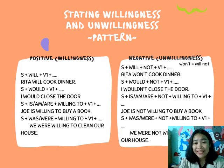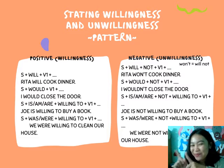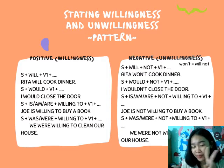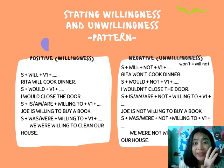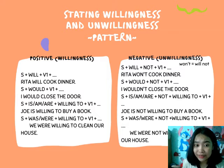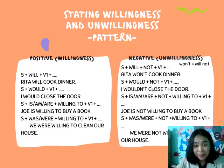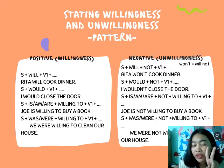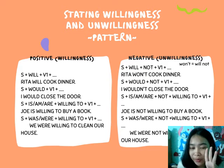Now let's learn the patterns for stating willingness. Positive patterns: subject + will + verb 1; subject + would + verb 1; subject + is/am/are + willing to + verb 1; subject + was/were + willing to + verb 1. Examples: 'Rita will cook dinner,' 'I would close the door,' 'Joe is willing to buy a book,' 'We were willing to clean our house.'